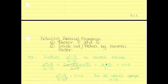Our reduced rational expression x squared minus 9 over x minus 3 equals x plus 3 for all values except x equals 3. In the original problem, the denominator is x minus 3, and we cannot let it equal zero. So we restrict x: x can be anything except 3.